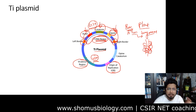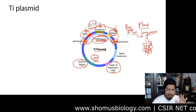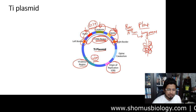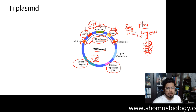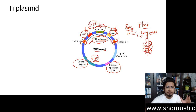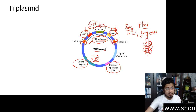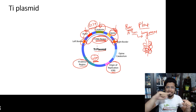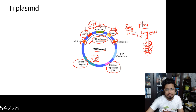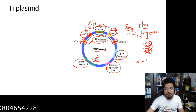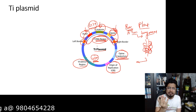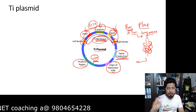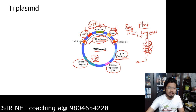Agrobacterium tumefaciens is called nature's genetic engineer because it can easily transfer its T-DNA region using vir gene products. The vir gene products cut the T-DNA from the left and right borders, and only that portion is transferred from the bacterial cell into the plant cell. Some vir proteins form a channel between the plant cell and bacterial cell through which the DNA passes. There is also an opine catabolism region - the bacteria takes up opines released by the plants and utilizes them, so opine catabolism genes are very important for the bacteria.